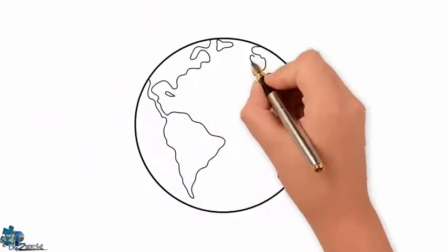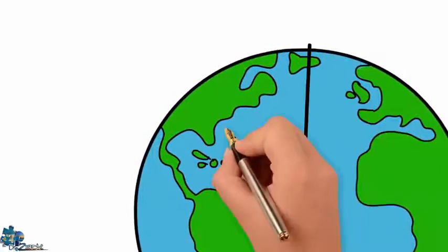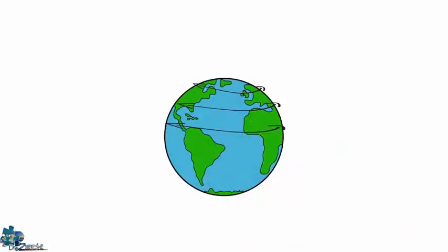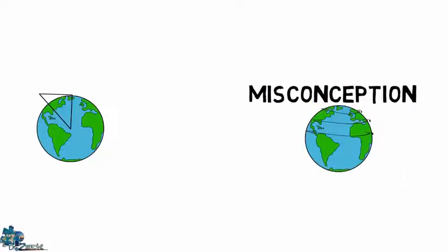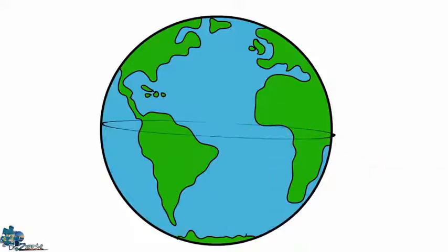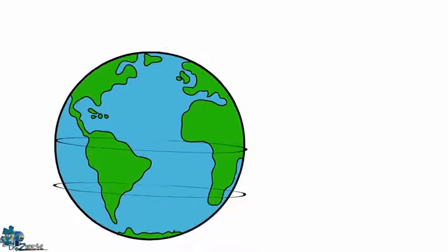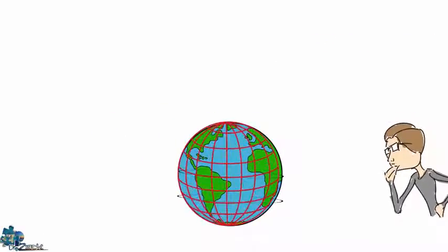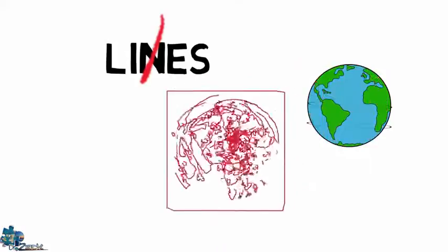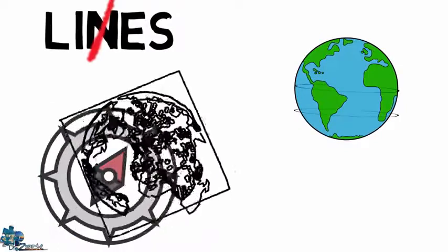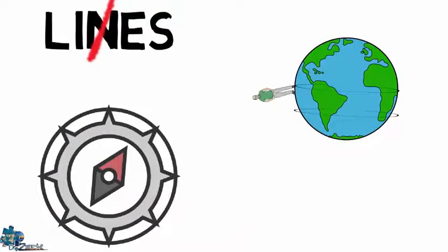There seems to be some confusion about the Earth's supposed curvature and how it is measured, as well as how we perceive it. Some people are proposing that the curvature is more pronounced at higher latitudes. This however is a misconception. I can see how this can be confusing, because if you take a piece of string and wrap it around the equator and then also do the same for the Tropic of Capricorn, it is clear there is a difference in the size and curvature between the two. But let's not overthink things. We have to remember that the latitude and longitude lines are just that — lines. Imaginary lines imposed on the globe for the purpose of navigation.